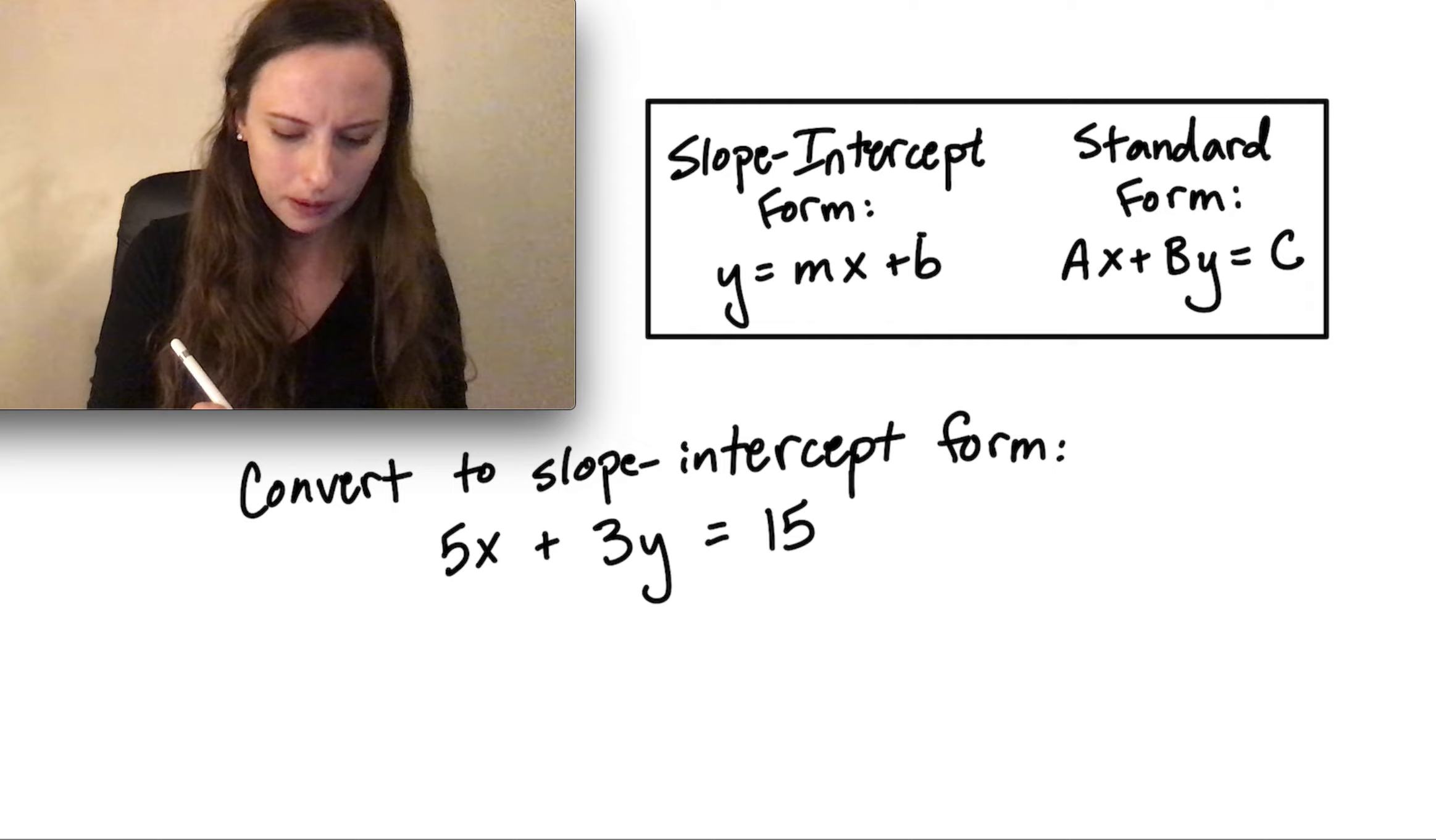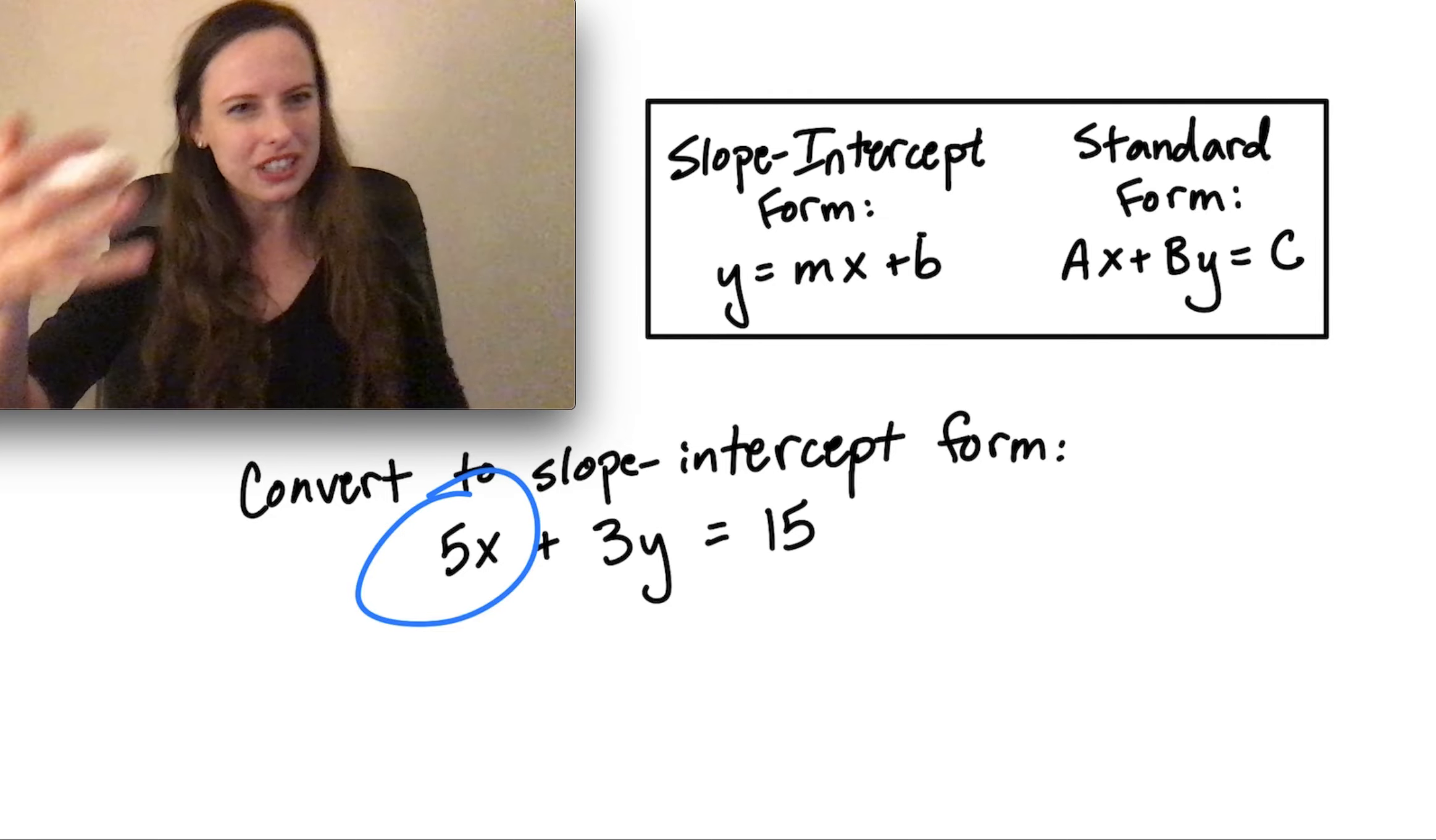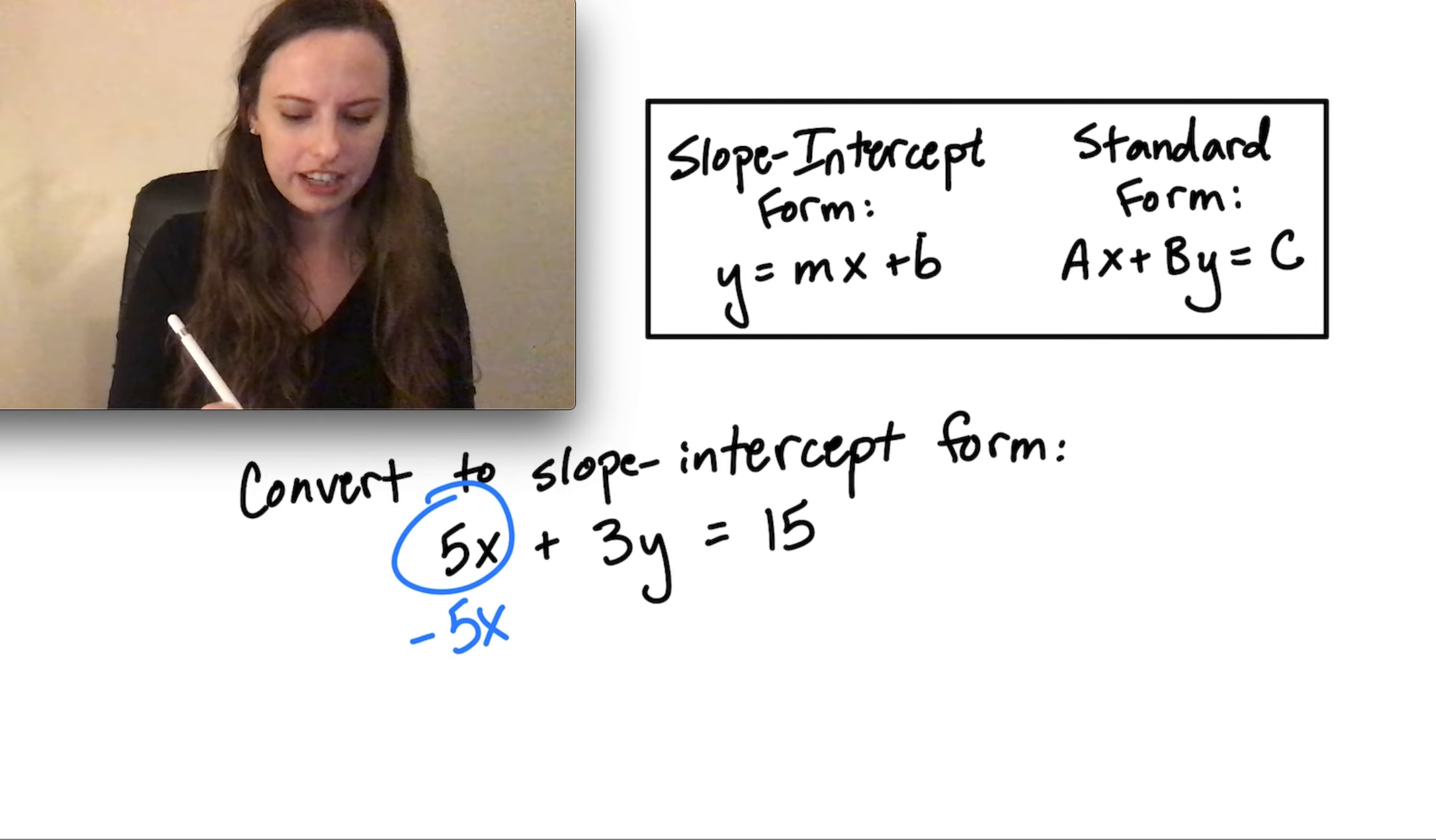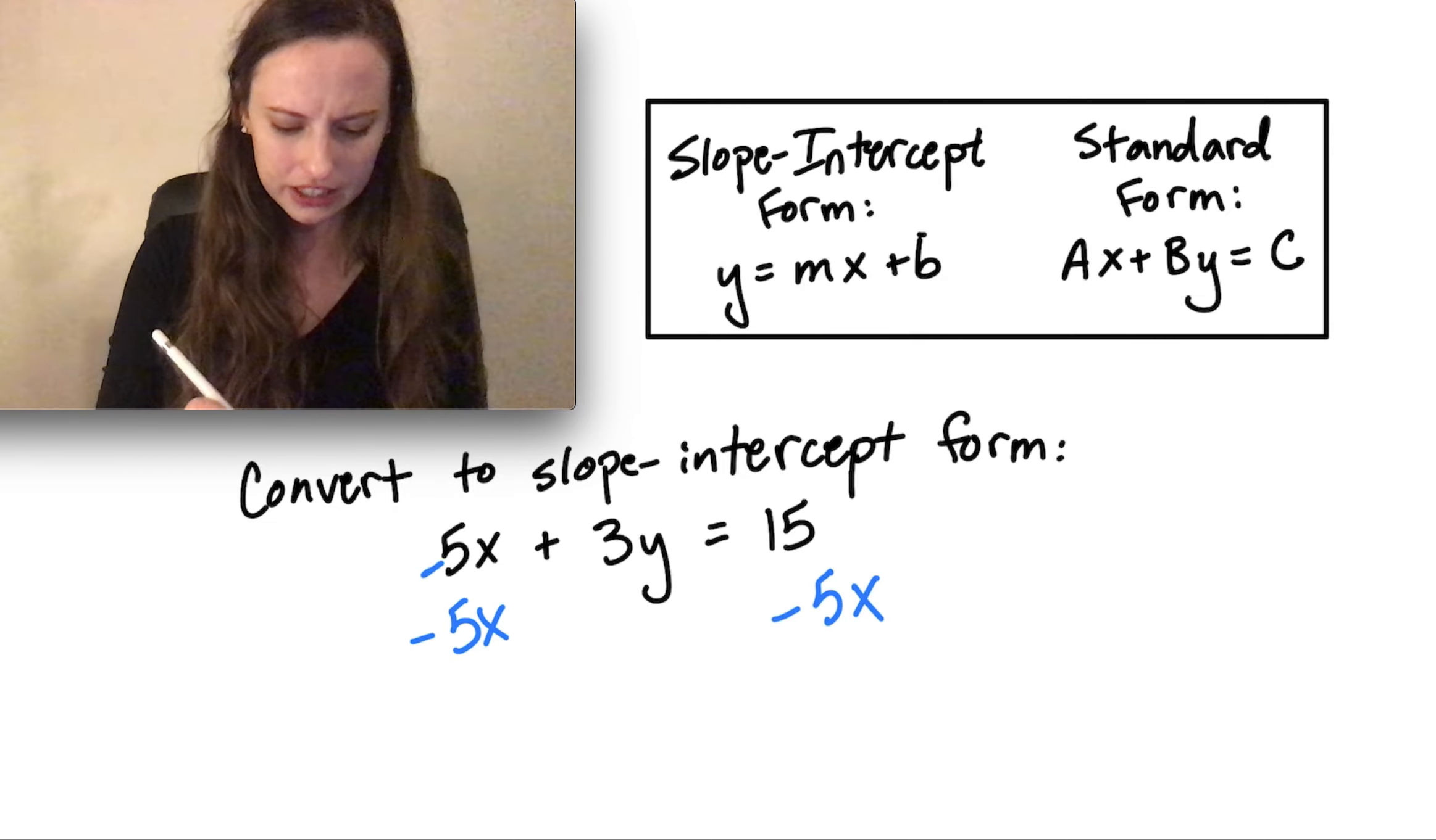I'm going to start by moving the x term to the other side. This time my x term is positive. So to cancel it out or move it over, I have to subtract. That positive 5x will cancel with a negative 5x. If I do it on the left side, I've got to do it on the right-hand side as well.